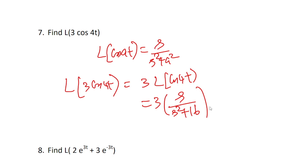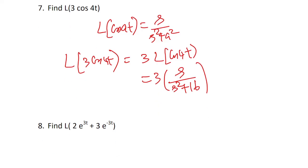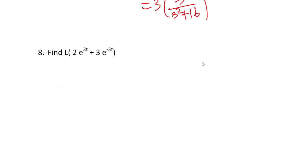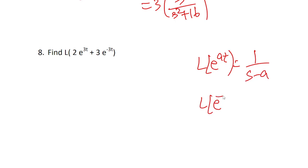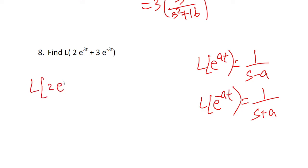Laplace of the exponential formula: L{e^(at)} = 1/(s − a). For L{2e^(3t) + 3e^(−3t) + 2e^(3t)}: using the exponential formula, L{e^(at)} = 1/(s − a). So splitting using linear properties: 2·L{e^(3t)} + 3·L{e^(−3t)}.